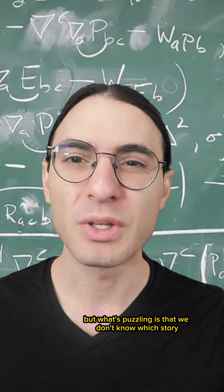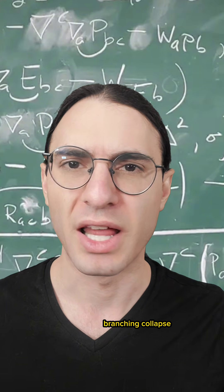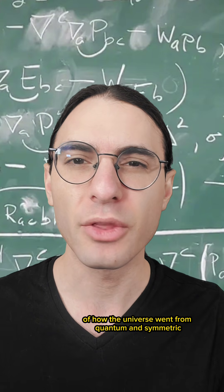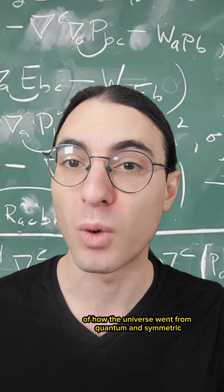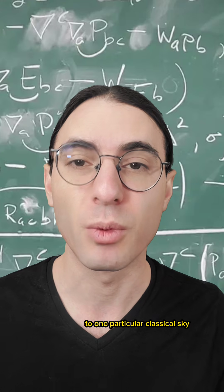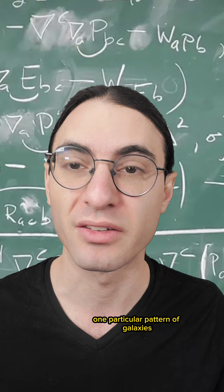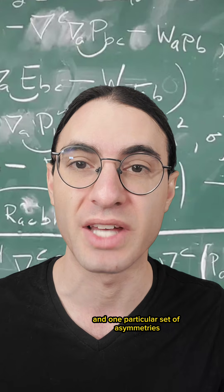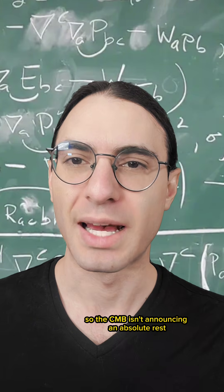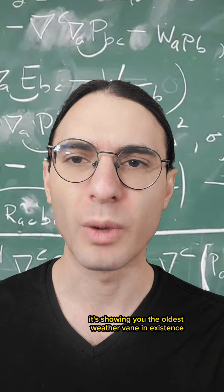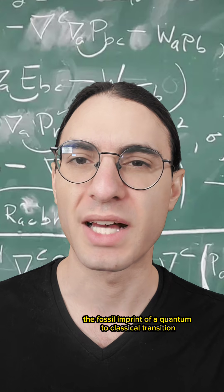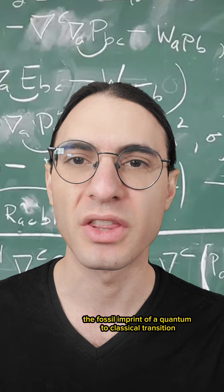What's puzzling is that we don't know which story — branching, collapse, or something else — is the correct fundamental account of how the universe went from quantum and symmetric to one particular classical sky, with one particular drift, one particular pattern of galaxies, and one particular set of asymmetries. So the CMB isn't announcing an absolute rest. It's showing you the oldest weather vane in existence: the fossil imprint of a quantum-to-classical transition that the universe made one way or another.